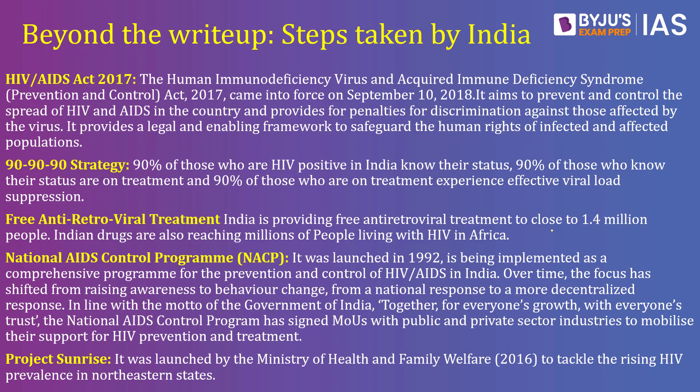There have been multiple initiatives taken by the government of India to fight against this. For example, in 2017, Parliament passed the HIV AIDS Act of 2017 to prevent and control the spread of HIV and AIDS in the country. It also provides for penalties for those who discriminate against people who have HIV. As we know, people with HIV are discriminated against in society — not given jobs, treated as untouchable — so there is a penalty for that.